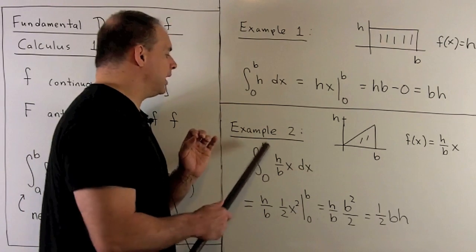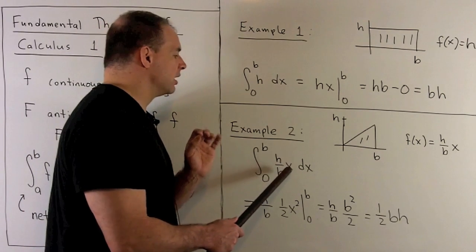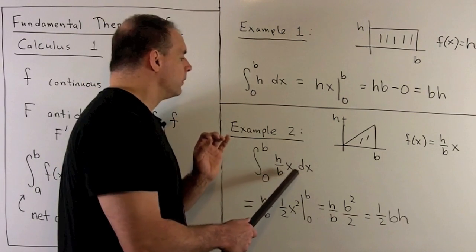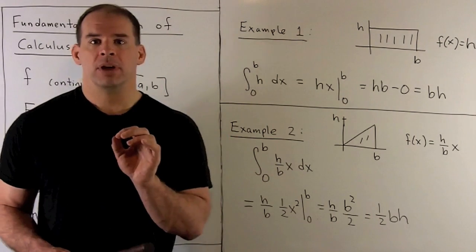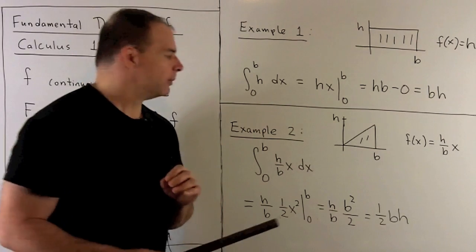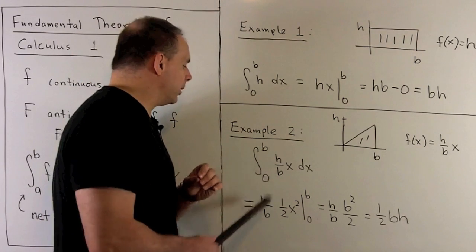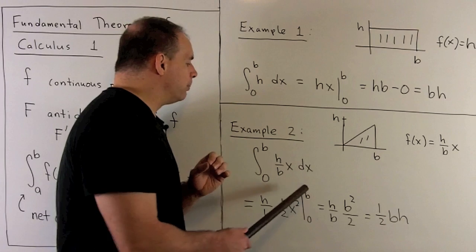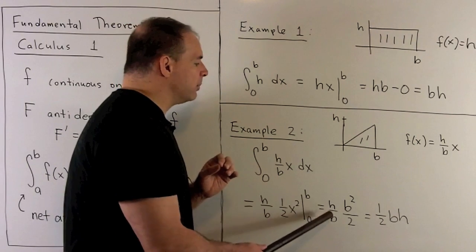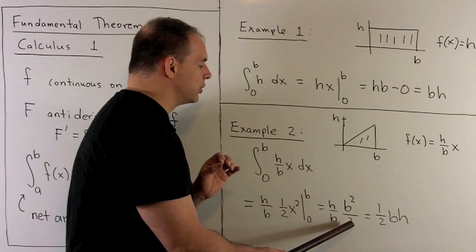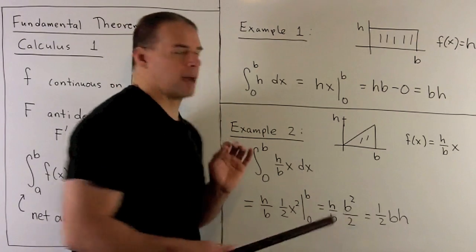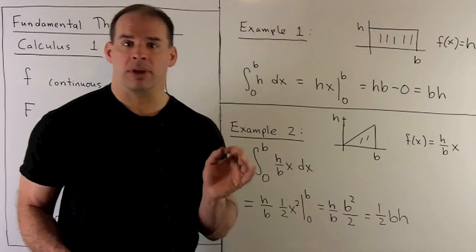We take the definite integral from zero to b of (h/b)x with respect to x. Taking the antiderivative: x is x to the one, so we add one to the exponent and flip over, giving us one-half x squared times (h/b). Evaluating at b and zero: (h/b) times b²/2 minus zero gives us one-half b times h, which agrees with our formula for the area of a triangle.